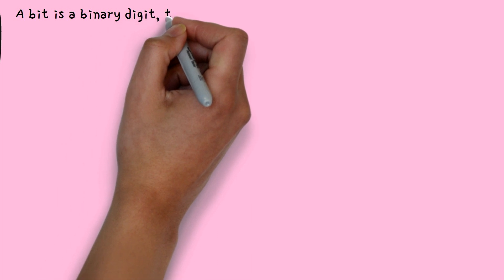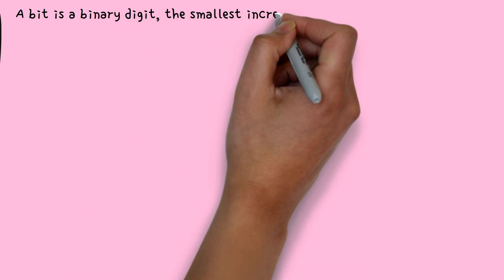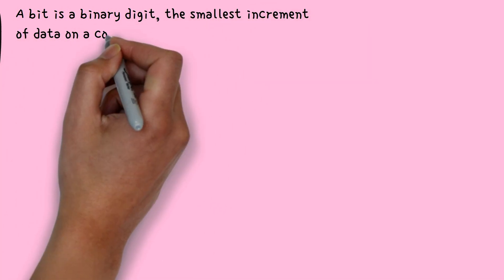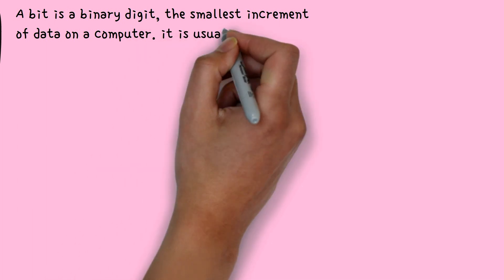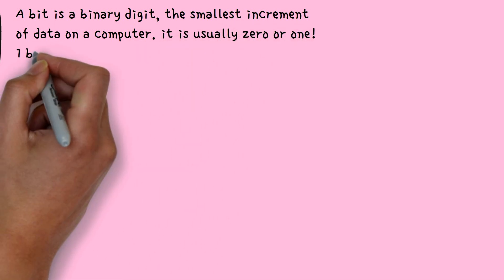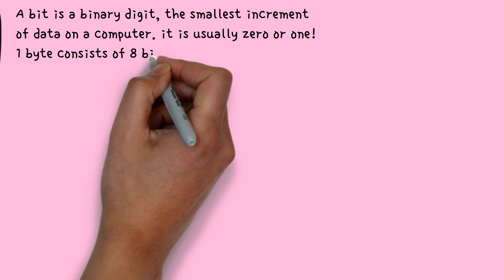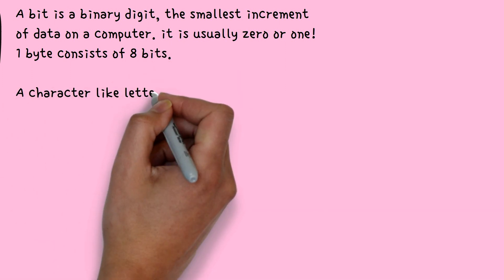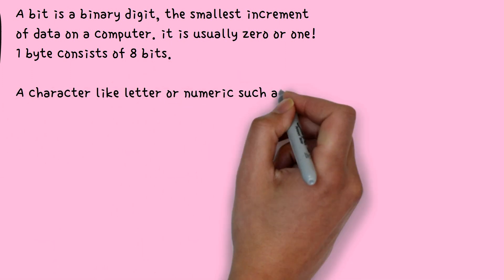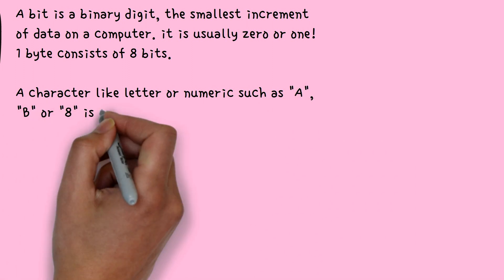A bit is a binary digit, the smallest increment of data on a computer. It is usually zero or one. One byte consists of eight bits. A character like a letter or a numeral such as A, B, or 8 is stored as one byte.